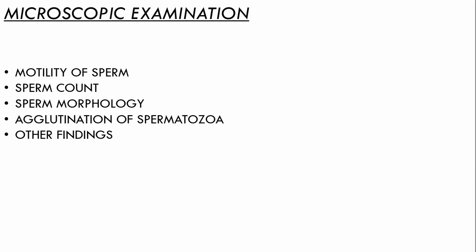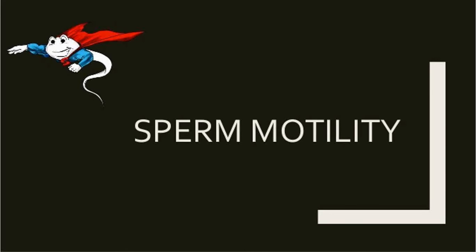Students, we have finished with physical and gross examination and chemical examination. Now we move to microscopic examination. The semen sample is processed for examination under microscope. Here we look for motility of sperm, sperm count, sperm morphology, agglutination of spermatozoa, and some other findings present in the semen.